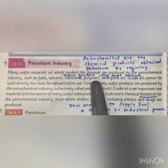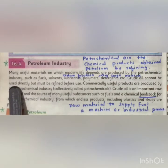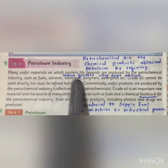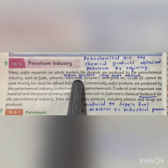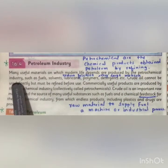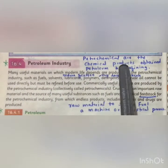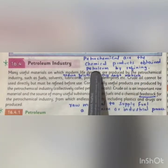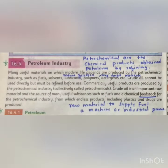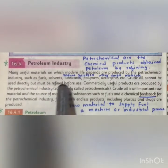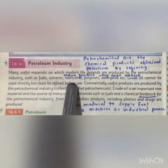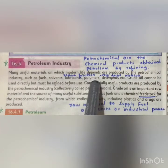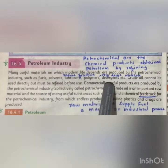Many useful materials on which modern life depends are produced by the petrochemical industries. Petrochemicals are the chemicals obtained from petroleum by refining. Examples include fuels, solvents, lubricants — which help to reduce friction — polymers, which are synthetic or natural substances made from very large molecules or macromolecules, and detergents.